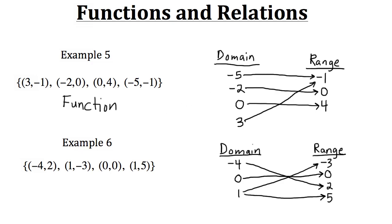Now let's take a look at example 6. We have negative 4, 0, and 1 as values within our domain. Again, if this relation is going to be a function, each one of these values must have only one respective output. Negative 4 has one output — 2. The 0 has only one output — 0. But the input of 1 has two different outputs: negative 3 and 5. Because of this, this relation would not be classified as a function. In order to be a function, that input must have only one output.